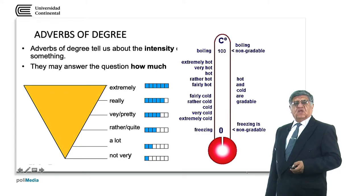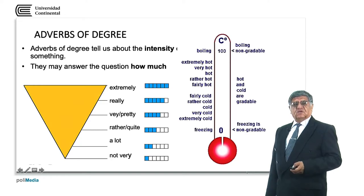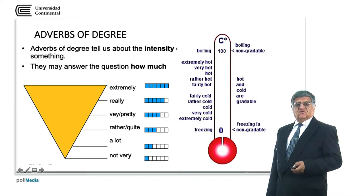Adverbs of degree answer the question of how much. From not very to extremely — not very is the lightest, and extremely is the highest possibility. Really, pretty, rather, and a lot are medium possibilities — also indicating degree, intensities of something.